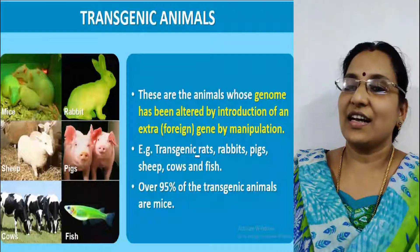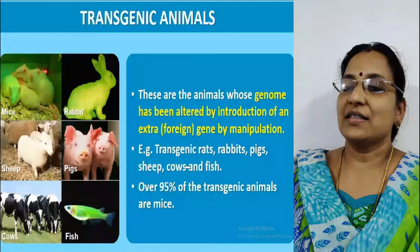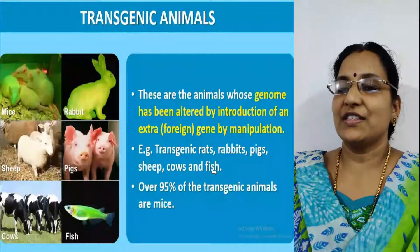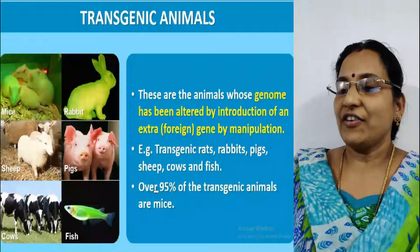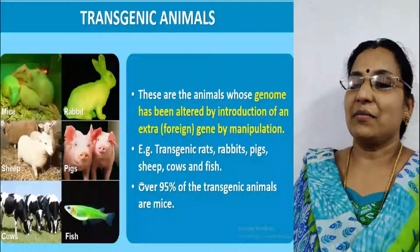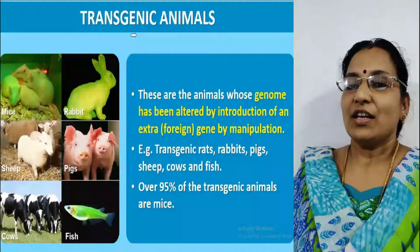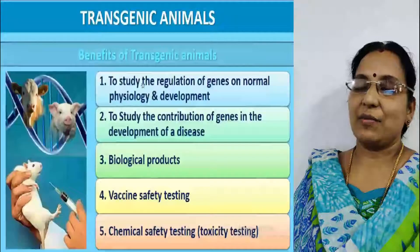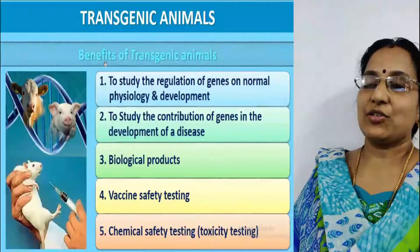Various examples include transgenic rats, rabbits, pigs, sheep, cow, and fish. Over 95% of transgenic animals are mice. From your examination point of view, we can expect two or more questions from this area.